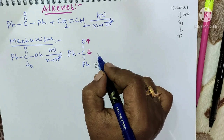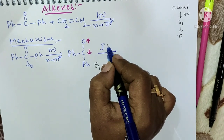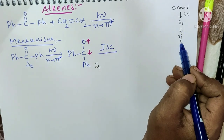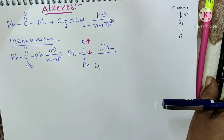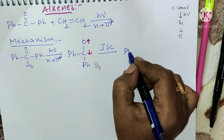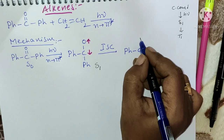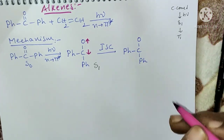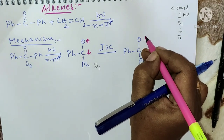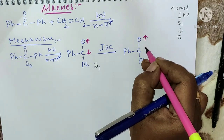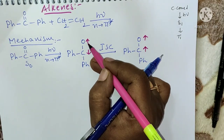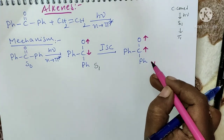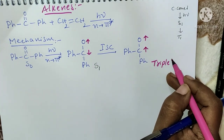Through inter-system crossing, the singlet state is converted into the triplet state. In the singlet state the electrons are anti-parallel; after ISC they become parallel — that condition is called the triplet condition.